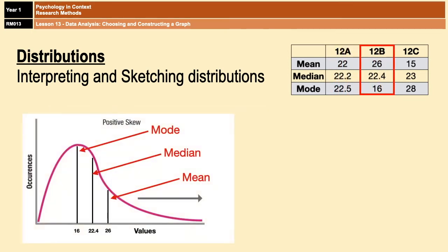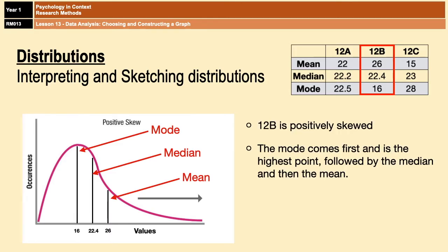The results for 12B, however, are a little bit different because the mode and the median are below the mean. The mode still remains the highest point because it's the most common score, but it is the furthest to the left, resulting in this early peak and then a long tail on the right.